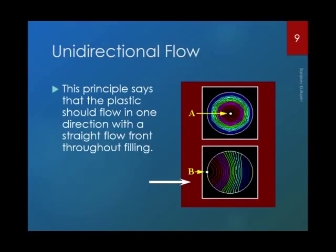This type of gate is used for making lenses and some transparent parts for automobile components. However, the flow length increases with this type of gating.